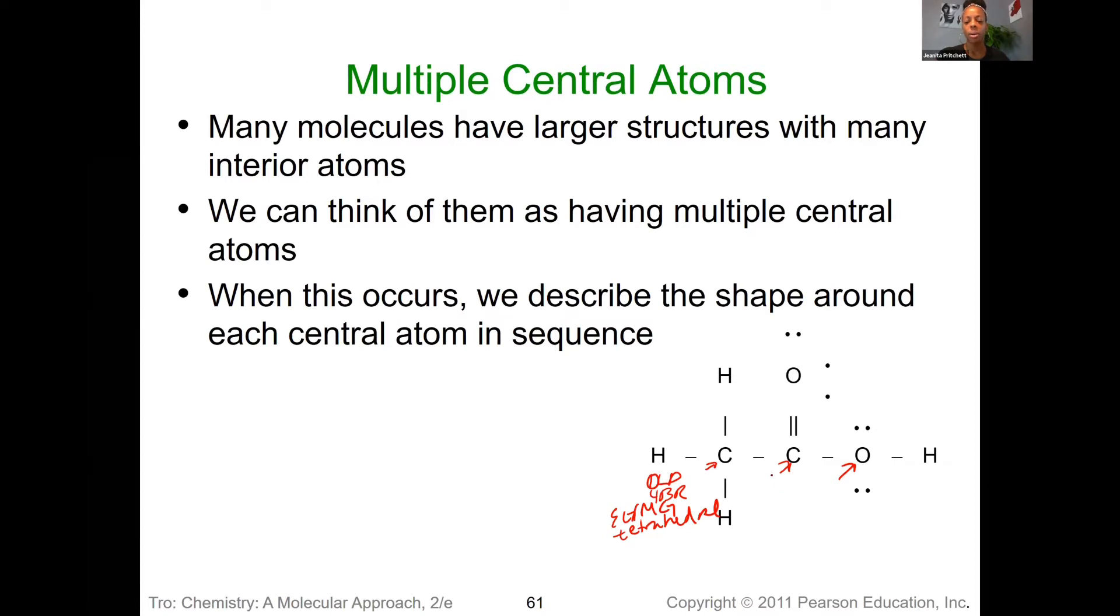For the second carbon, we would say there are zero lone pairs and now three bonding regions. Remember to count that double bond as a region. So that would mean that our electron and molecular geometry, because there's no lone pairs, would be trigonal planar.